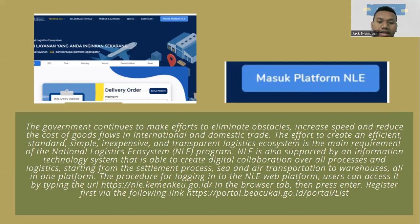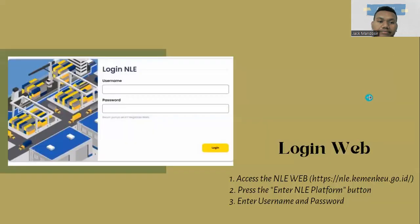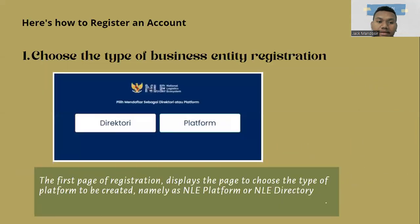The procedure for logging into the NLE web platform: users can access it by typing the URL https://nle.kemenkeu.go.id in the browser tab, then press enter. Register first via the following links: portal bea cukai login, web one — access the NLE web, two — press the enter NLE platform button, three — enter username and password.